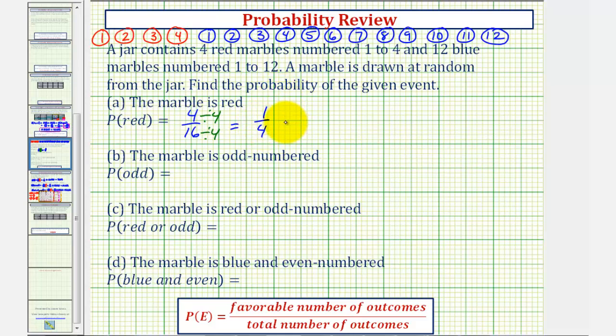Which we should recognize as a decimal as 0.25, which as a percent would be 25%. Remember a probability can be expressed as a fraction, decimal, or percentage, though most of our homework does ask for a fraction or decimal.